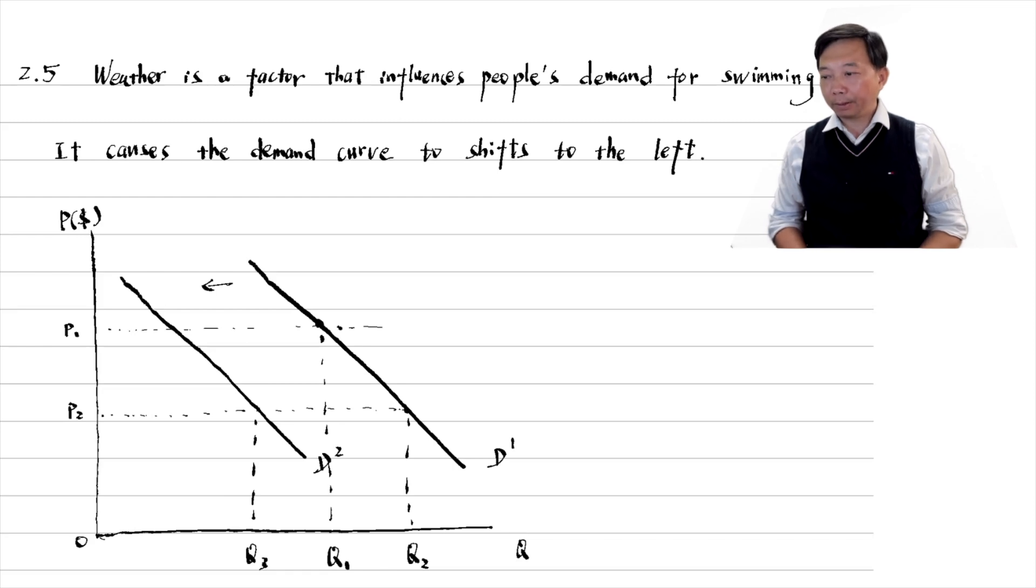We can illustrate it in a diagram. Suppose the price of swimming drops from P1 to P2. If the weather is unchanged, the quantity of swimming demanded will increase from Q1 to Q2. However, the cold weather shifts the demand curve to the left from D1 to D2. The new quantity demanded is Q3. We see that even with a lower price of P2, the demand for swimming in winter is probably smaller than the original demand in summer.